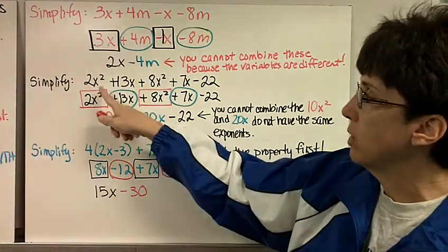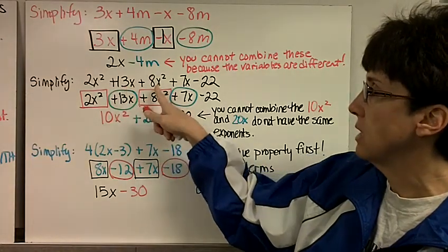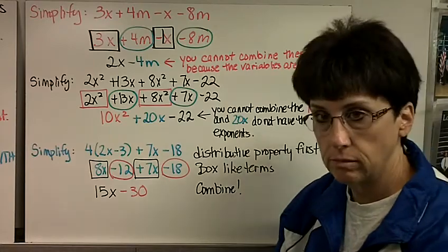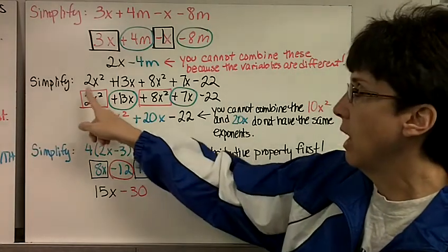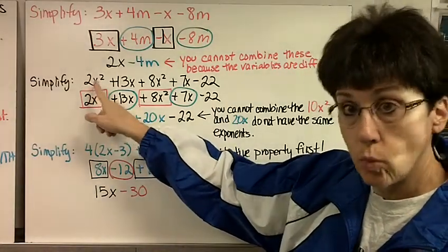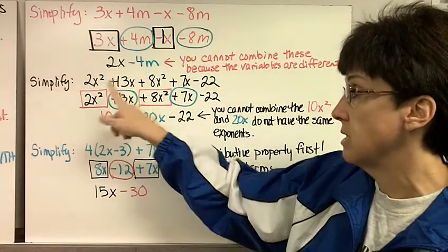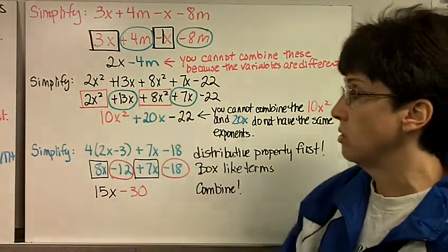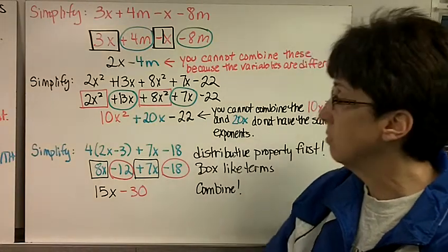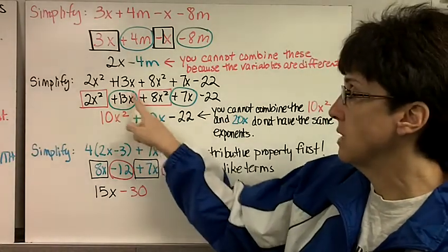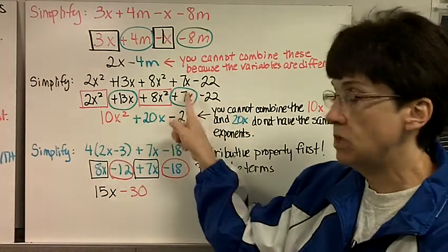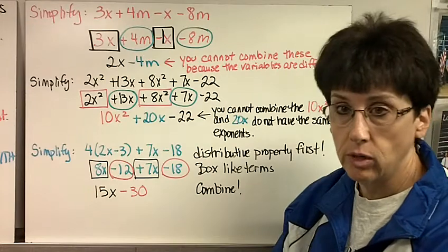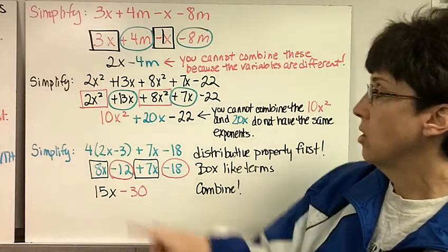What if I have 2x squared plus 13x plus 8x squared plus 7x minus 22? Well, I can box all of the x squareds. They are different than the x's. So I'm going to box 2x squared plus 8x squared because they have a variable 2. Then I'm going to circle the plus 13x and the plus 7x. Those aren't the same as the x squared because their variable isn't there. It's a 1, but we don't write it down if it's a 1.